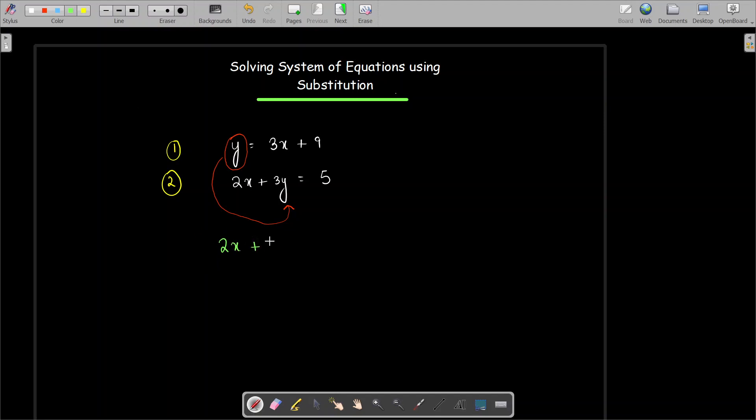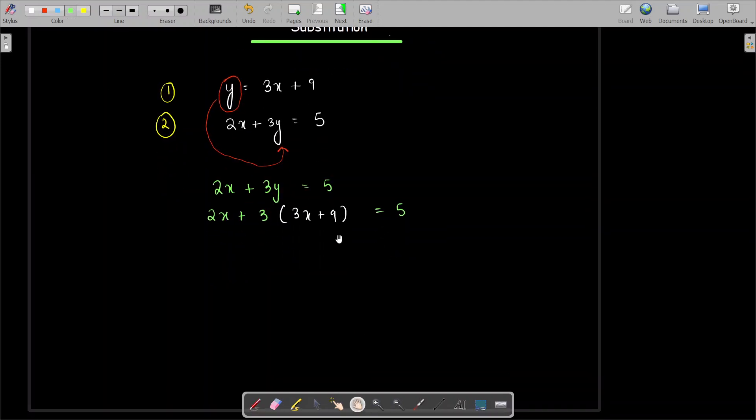So let's do that. In the second equation, which is 2X plus 3Y equals 5, instead of Y I am going to write 3X plus 9. 3X plus 9 I got from the first equation.